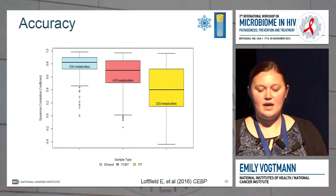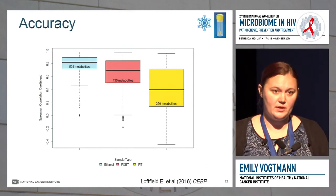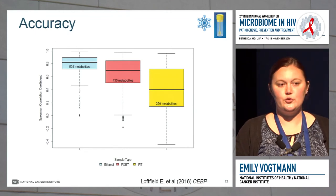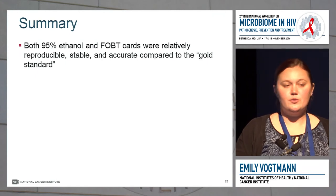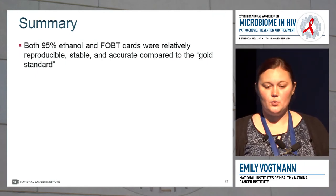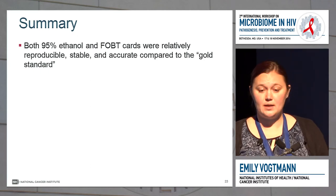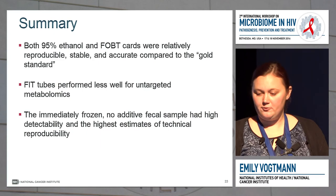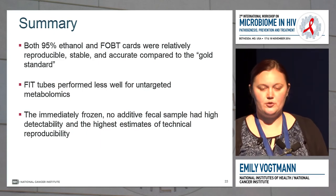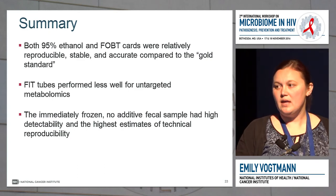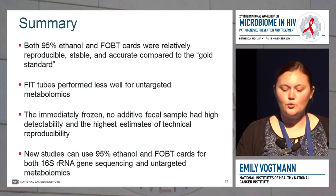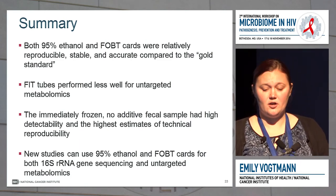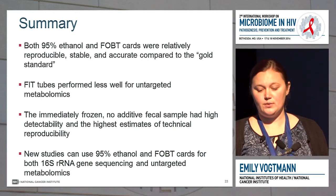For accuracy, the 95% ethanol and FOBT cards appeared more similar to the immediately frozen samples with no preservative. The FIT tube again didn't look as similar to the no-preservative sample. In summary, 95% ethanol and FOBT cards were relatively reproducible, stable, and accurate compared to our gold standard. The FIT tubes performed less well for untargeted metabolomics. We suggest that new studies needing to leave samples at room temperature should preferably use 95% ethanol or FOBT cards, since they're good for both 16S rRNA gene sequencing and untargeted metabolomics.